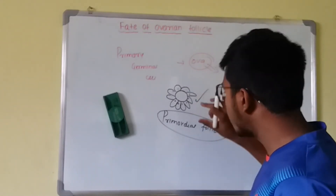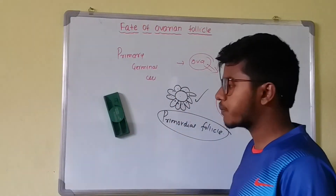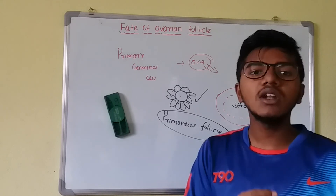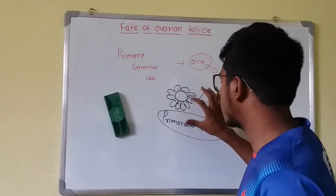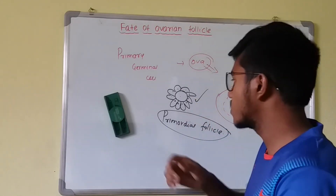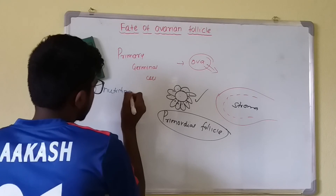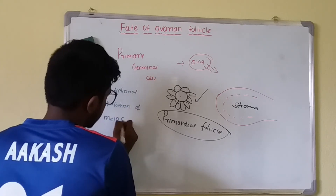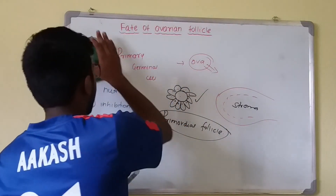When a child is born, it is born with primordial follicles. The follicular cells have two functions: first, to provide nutrition to the oocyte; and second, to inhibit the oocyte — keeping it only in the diplotene stage of meiosis prophase I, thereby inhibiting cell division.